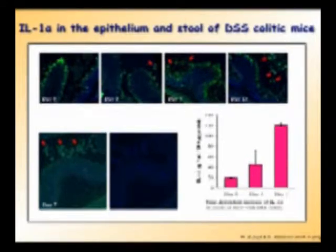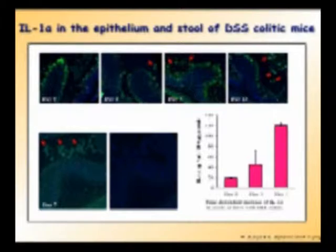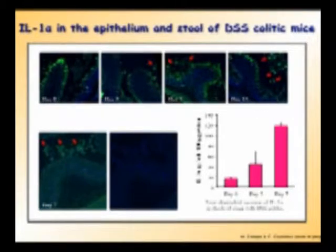We tend to talk only about apoptosis — until about 15 years ago cells were said to die by necrosis, but if you look at the literature in the last 15 years cells apparently don't die by necrosis anymore, only by apoptosis. In reality, even apoptotic cells eventually fall apart. IL-1α is a relatively understudied but major mediator of inflammatory response in the DAMP field.